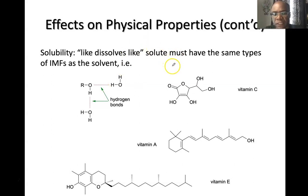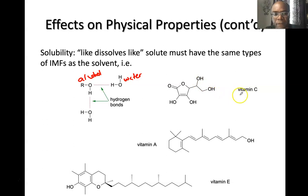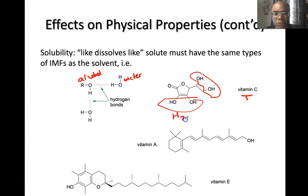Solubility follows the rule 'like dissolves like.' Where you get hydrogen bonding, you expect alcohols to dissolve in water because both have hydrogen bonding. For example, vitamin C dissolves in water because the OH groups create hydrogen bonds with H₂O molecules, dissolving the vitamin C powder. That's based on the principle of like dissolves like.